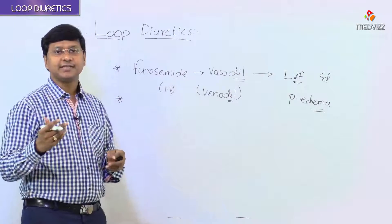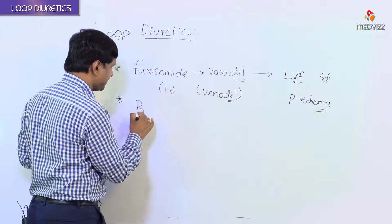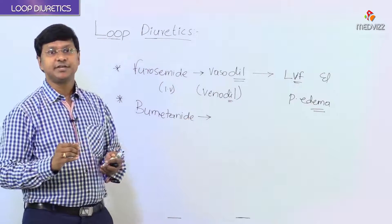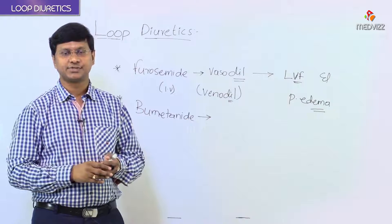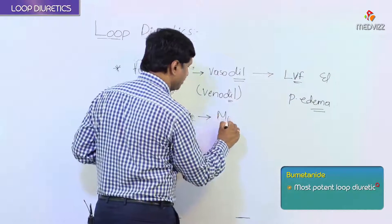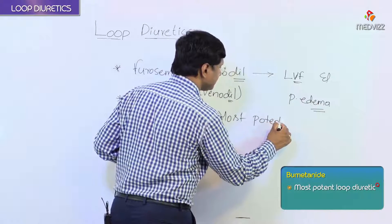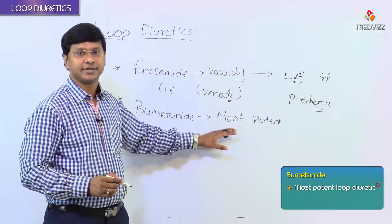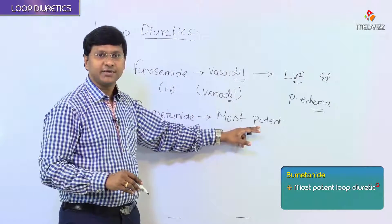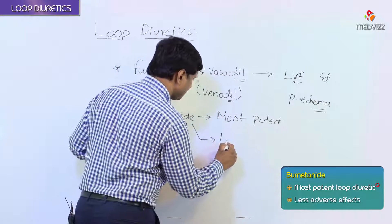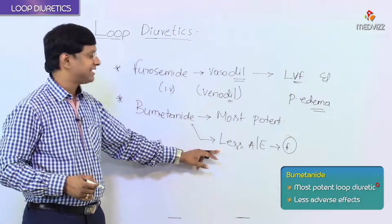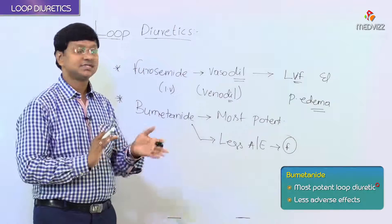Among all the loop diuretics, bumetanide is the most potent loop diuretic — this is an important MCQ. Another important advantage of bumetanide is that it is the most potent loop diuretic and has lesser adverse effects compared to furosemide.